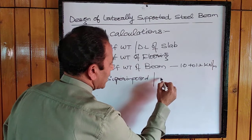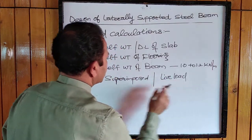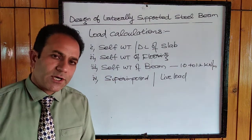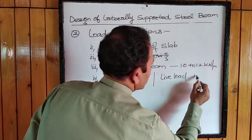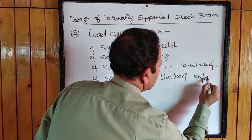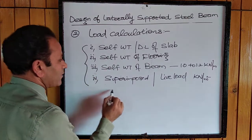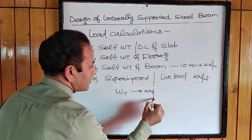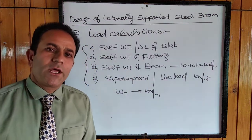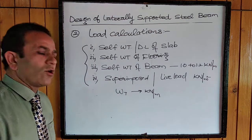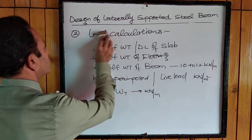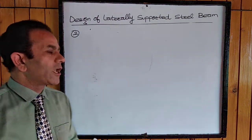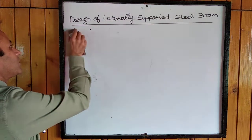Then the superimposed or live load — its intensity must be provided, or we take it suitably from the IS codes for that particular structure, in kilo-newtons per square meter. Adding up all these loads, we find the total UDL (wt) in kilo-newtons per meter — the entire load acting on that particular beam for which our design must be valid.